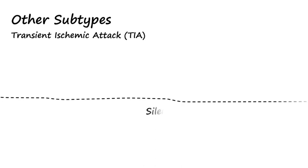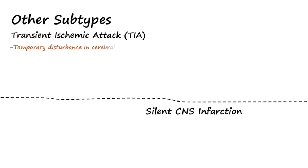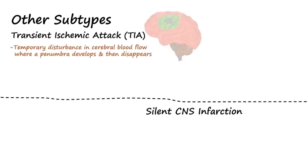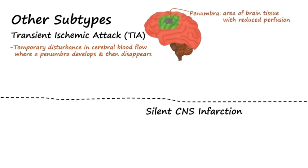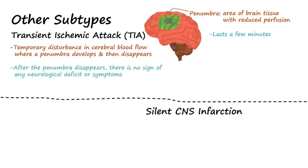Two other subtypes of stroke include TIAs and silent CNS infarctions. A transient ischemic attack, or TIA, is a temporary disturbance in cerebral blood flow where a penumbra develops and then disappears. Penumbra is the name given to the area of brain tissue that has reduced perfusion. TIAs generally last a few minutes, after which there are no signs of any neurological deficit. TIAs most often occur hours or days before an actual stroke, so seeking medical attention immediately following a possible TIA is very important.